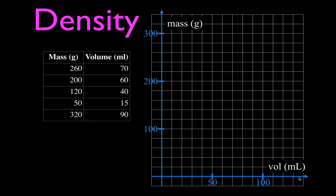Now we can plot our data. I like to start with the volume. The first volume is 70, and I go up to 260 — right about there. The next one: volume is 60 and mass is 200, right about there. Then 40 and 120. Then 15 for the volume and 50 for the mass. And one last data point at volume 90, mass 320. I plotted all those as best as I could.